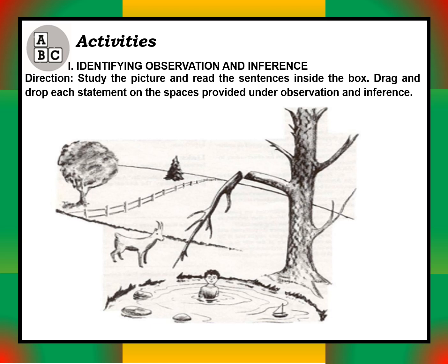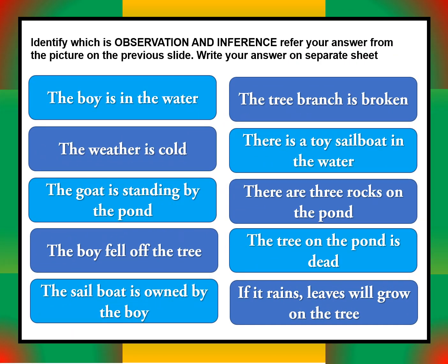In this activity, identify observation and inference from the picture. There is a boy, a goat, a tree, a toy sailboat, stones, and a lake. Identify which statements are observations and which are inferences. For example: the boy is in the water, the water is cold, the goat is standing by the pond, the boy fell off the tree, the sailboat is owned by the boy. Write your answers on a separate sheet of paper.